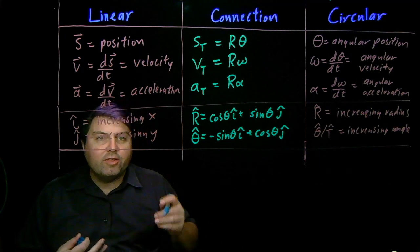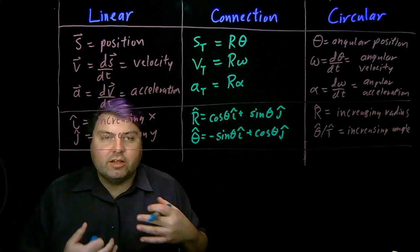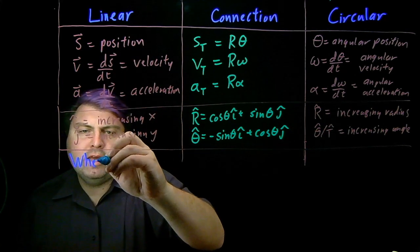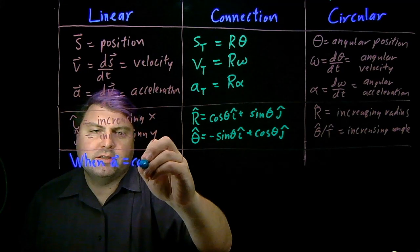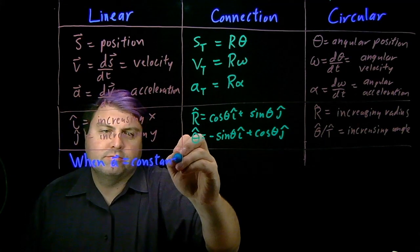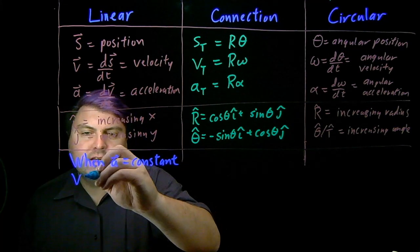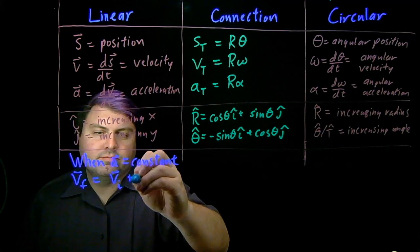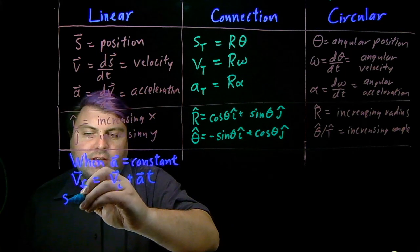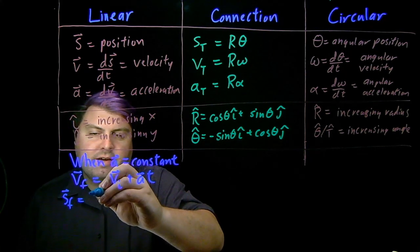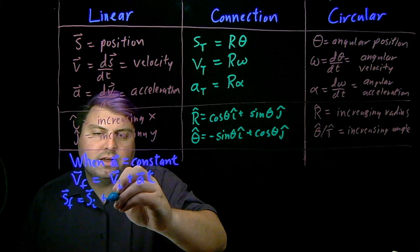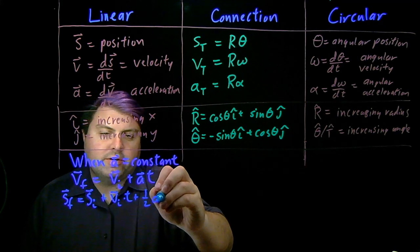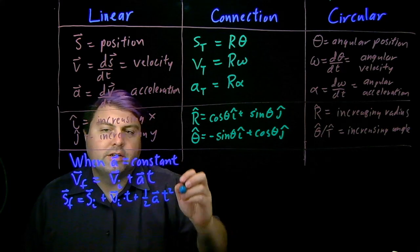And then now that we have all this, we can start using relationships. Once we have this, when our acceleration is constant, we get the kinematic equations. v_f equals v_i plus acceleration times time, and position f equals position i plus initial velocity times time plus one-half acceleration t squared.